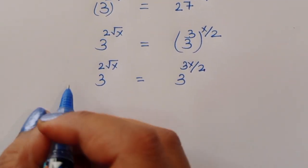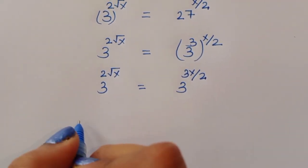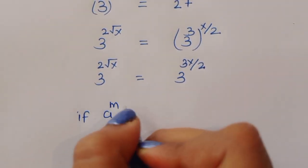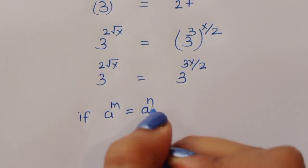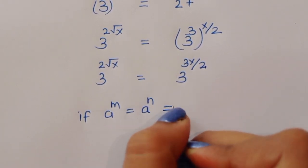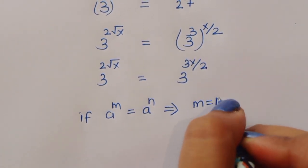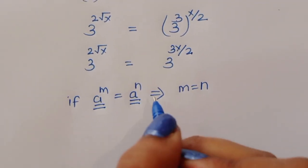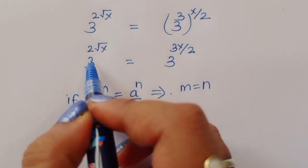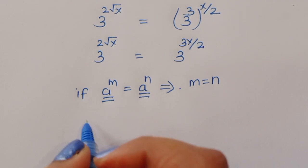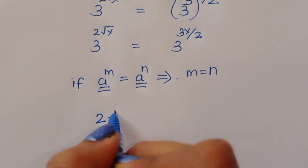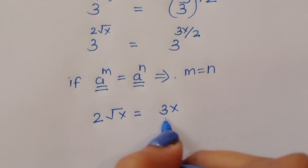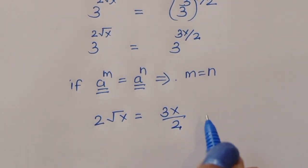We know the formula: if a to the power m equals a to the power n, then m equals n, because the bases are the same. Using this formula, we can write 2 root x is equal to 3x by 2.